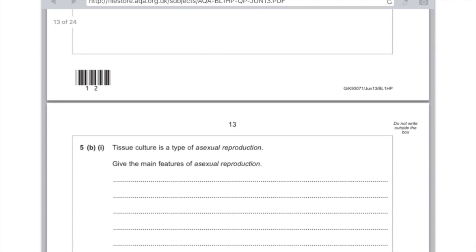5b part 1: Tissue culture is a type of asexual reproduction. Give the main features of asexual reproduction.